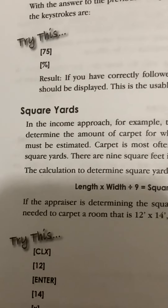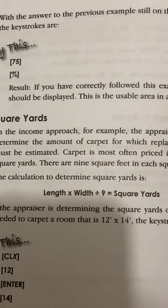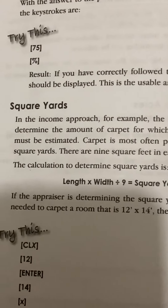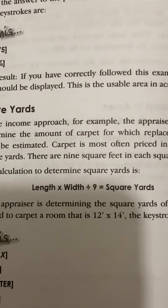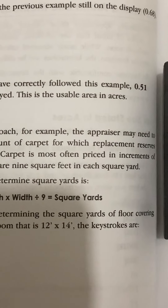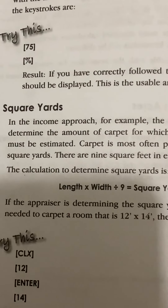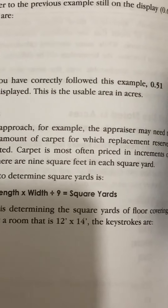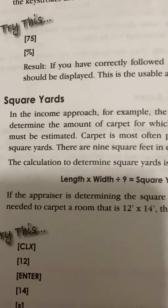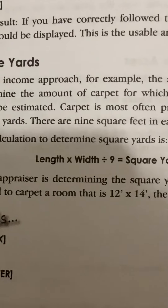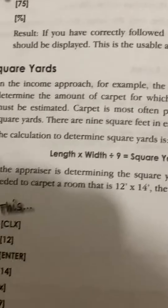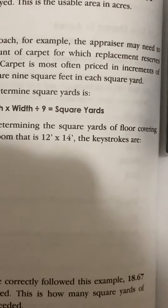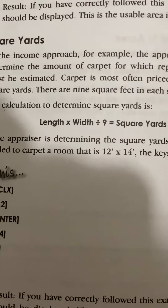Square yards. In the income approach, the appraiser may need to determine the amount of carpet for which replacement reserves must be estimated. Carpet is most often priced in increments of square yards. There are nine square feet in each square yard. The calculation to determine square yards is: length times width divided by 9 equals square yards.